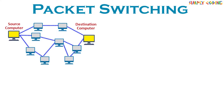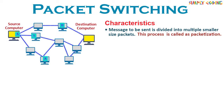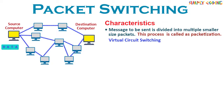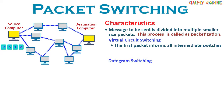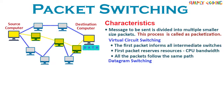In packet switching, the entire message to be sent is divided into multiple smaller-size packets. This process of dividing a single message into smaller packets is called packetization. These smaller packets are sent one after the other. Packet switching is of two types: virtual circuit switching and datagram switching. In virtual circuit switching, the first packet informs all intermediate switches of the packets that are following and reserves resources in terms of CPU bandwidth for the following packets as well. All the packets then follow the same path.